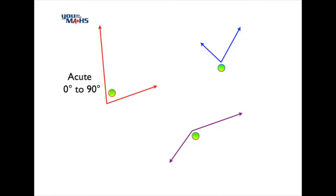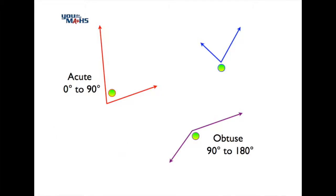An angle which is exactly 90 degrees is referred to as a right angle, and that's shown here in the bottom left hand corner. An angle which is between 90 and 180 degrees is referred to as obtuse, and that's shown here in purple in the bottom right hand corner.